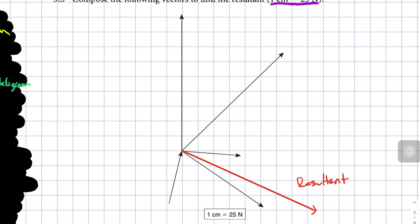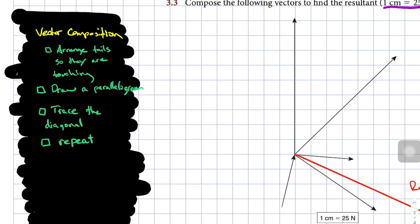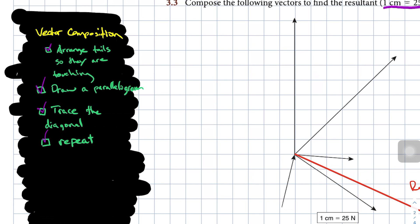And so we've done the first step now of composing all of these vectors. We've done two of them and what we could do is go through and continue to create new parallelograms and keep repeating these steps. So we arrange them so that the tails were touching. We drew the parallelogram. We trace the diagonal and we could repeat it.